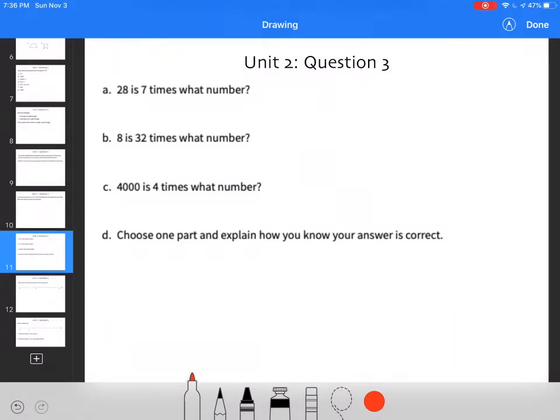28 is 7 times what number? So 7 times 4 equals 28.